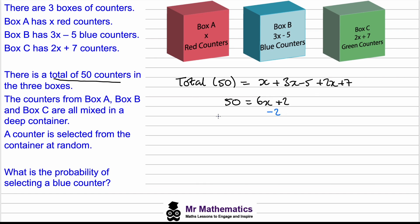Then we can take away the 2 from both sides, and these will cancel. So we've got 48 equals 6X. Now to work out X, we'll divide both sides by 6, and these will cancel. So X equals 8.